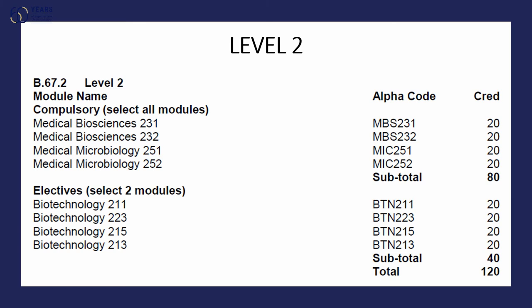At level 2, MBS students are required to register for three modules per semester. There are two modules which are compulsory in the first semester: MBS 231 and Medical Microbiology 251. Then they are expected to select from either Biotechnology 211 or BTN 215 — they have to select only one of these two. Students often want to know which is a better or preferred module, and that will be shown in the next slide.